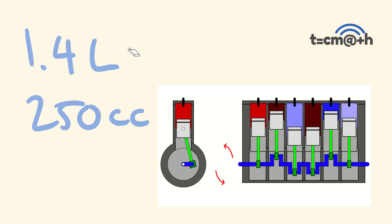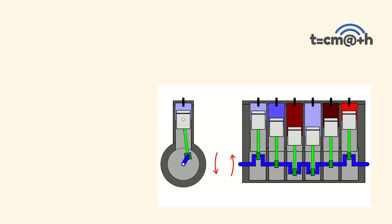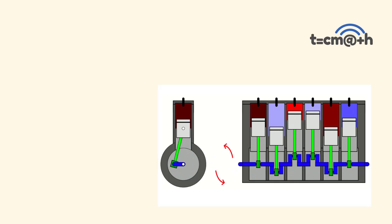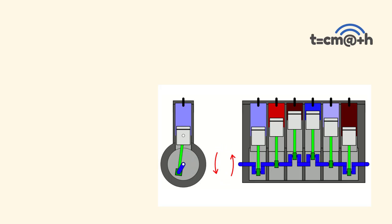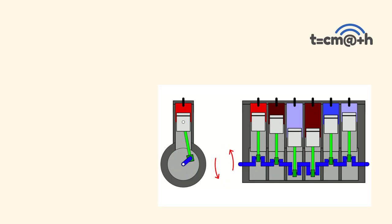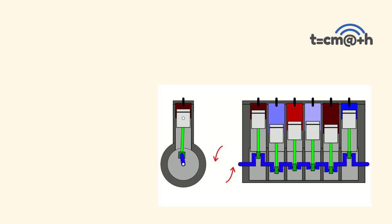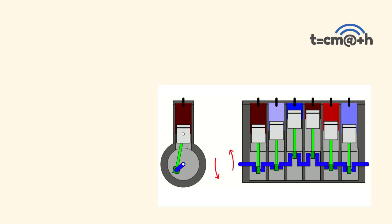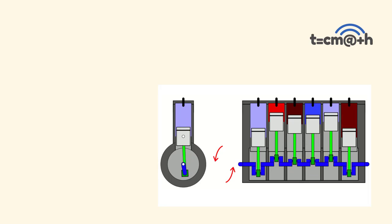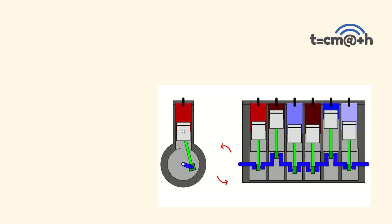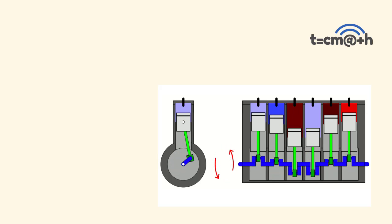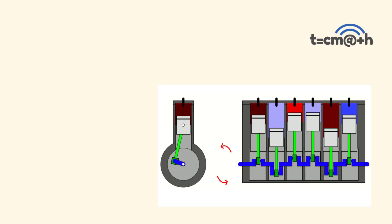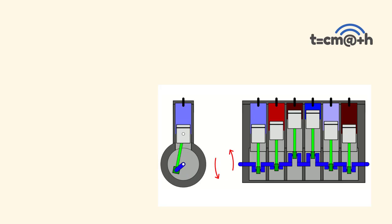The important thing to understand is the basics of how an engine works. I've got a diagram up right now that looks at this. We've got a six-cylinder engine, and what's happening is we have fuel being fired inside some cylinders. As it's being burnt, it causes pistons to go up and down. When we're talking about engine capacity or engine displacement, we're talking about the total volume that these pistons move for all six cylinders over one cycle of the engine.